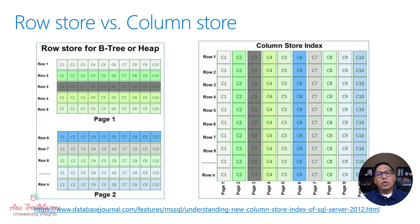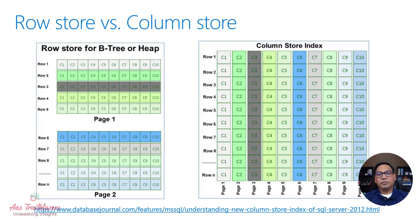Column store index is not unique to SQL pool and is available in the SQL family of products and services like SQL Server, Azure SQL DB, and Azure SQL MI. In fact, the concept of storing data in columnar fashion to optimize analytical workload queries is available in other technologies as well — for example, Parquet file format from Apache Spark, or ORC (Optimized Row Columnar) file format from Apache Hive.